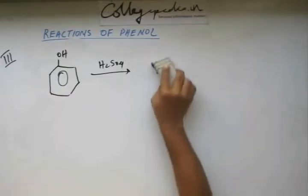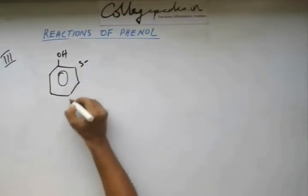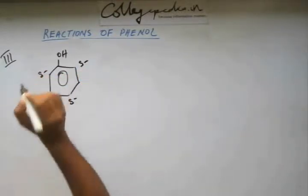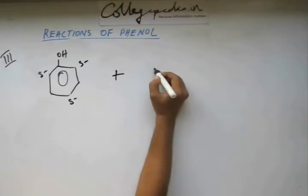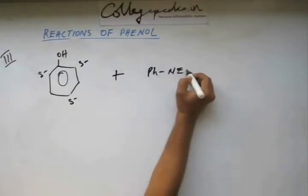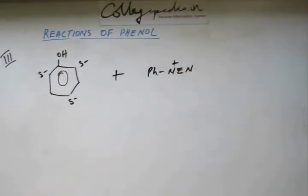Then extending this idea of the charges at ortho and para position, this phenol has partial negative charge at ortho and para position. There's an important reaction which you will study in detail: coupling of this phenol with a diazonium salt.